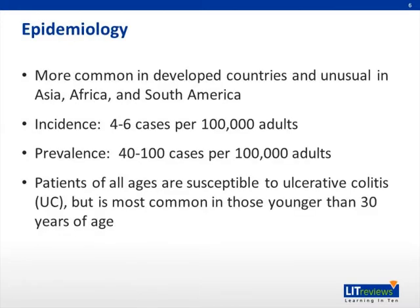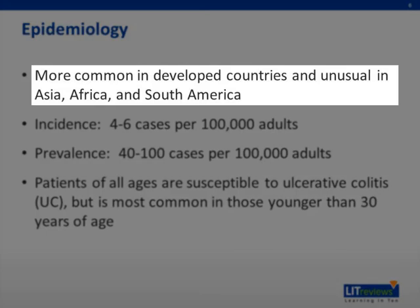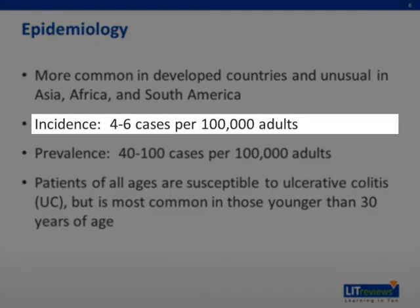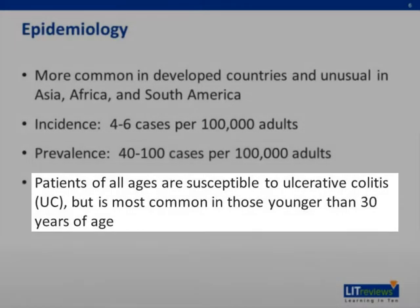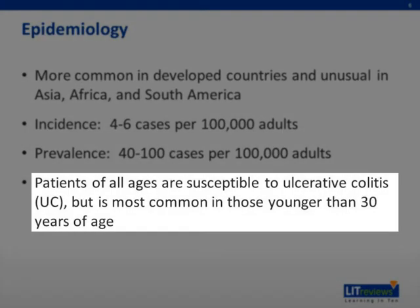Let's start with the epidemiology of ulcerative colitis. It is much more common in developed countries and is rare in Asia, Africa, and South America. The incidence is four to six cases per 100,000 adults, and the prevalence is estimated at 40 to 100 cases per 100,000 adults. Patients of all ages are susceptible, but it is most common in patients younger than 30 years old.